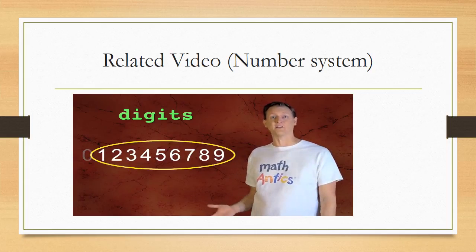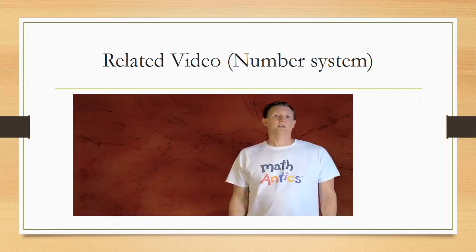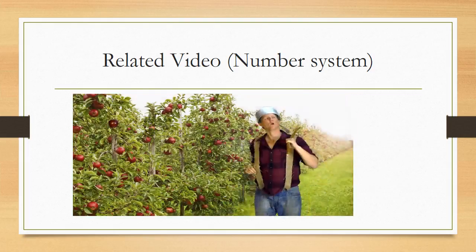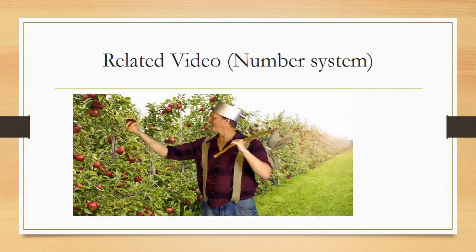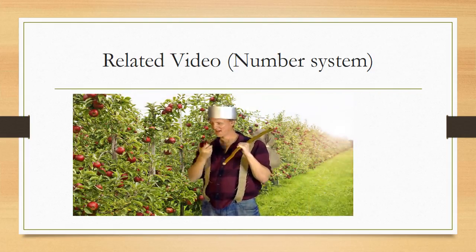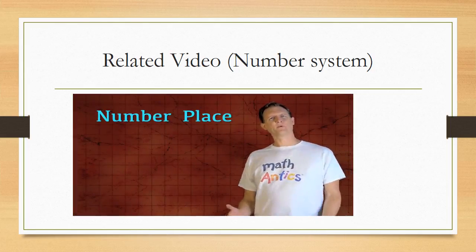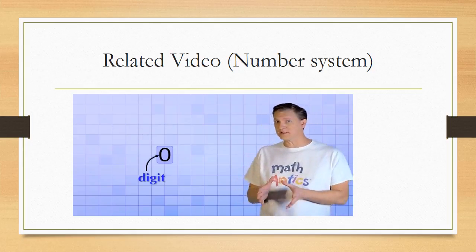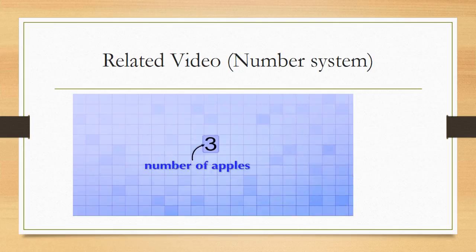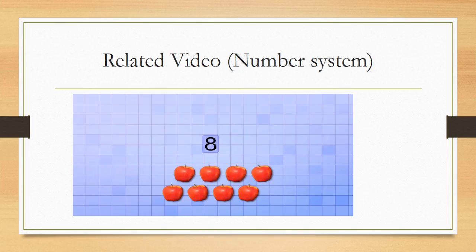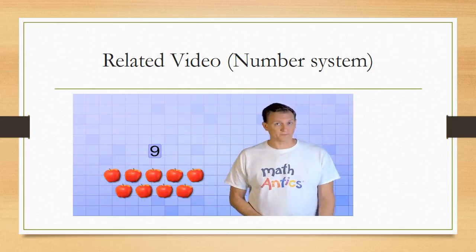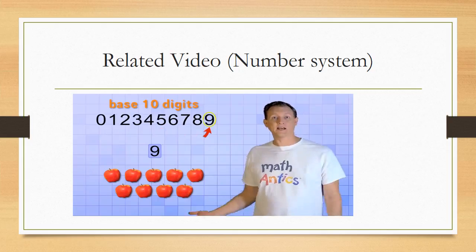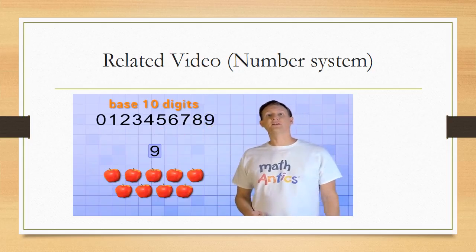At first glance you might think that's only 9 digits, but remember, 0 counts as one of the digits too. To see how our number system uses digits to represent amounts, let's pretend we have an apple orchard. We use a number place to count — imagine it as a small box that holds only one digit at a time. As we count apples, we change the digit in the number place: 0, 1, 2, 3, 4, 5, 6, 7, 8, 9. Now we've got 9 apples, but we've run out of digits to count with.